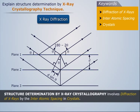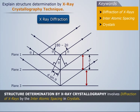Diffraction effects are produced by the three-dimensional grating. If D is the interplanar spacing, the path difference is twice the distance D sin theta. Thus, the Bragg equation used for determining the lattice parameters of a crystal can be written as 2D sin theta equals n lambda.